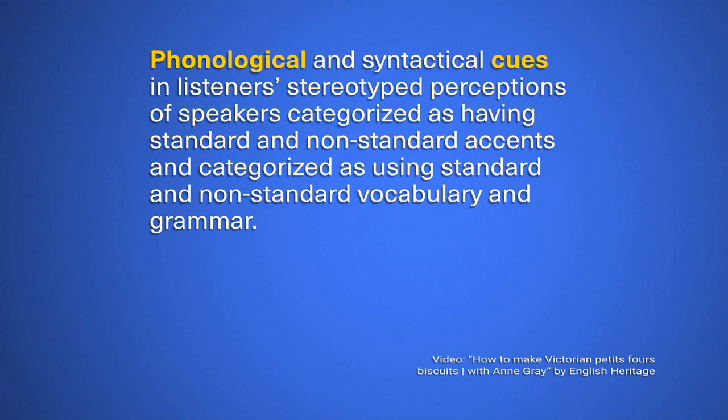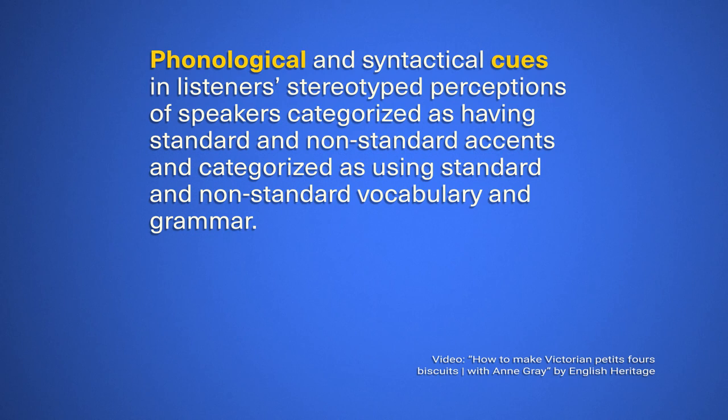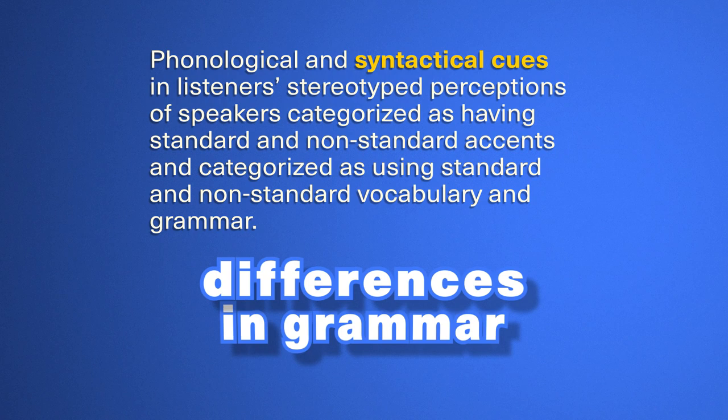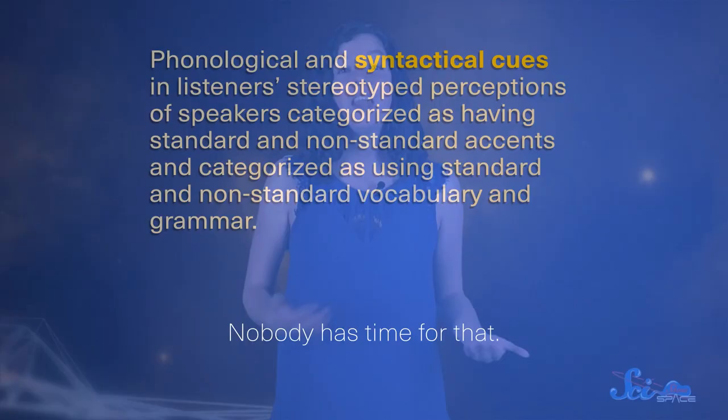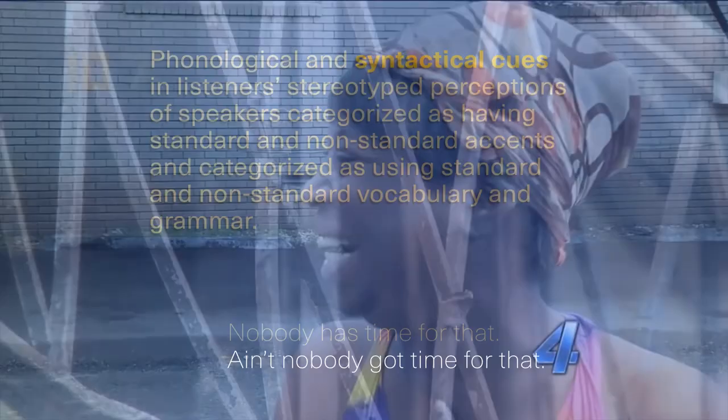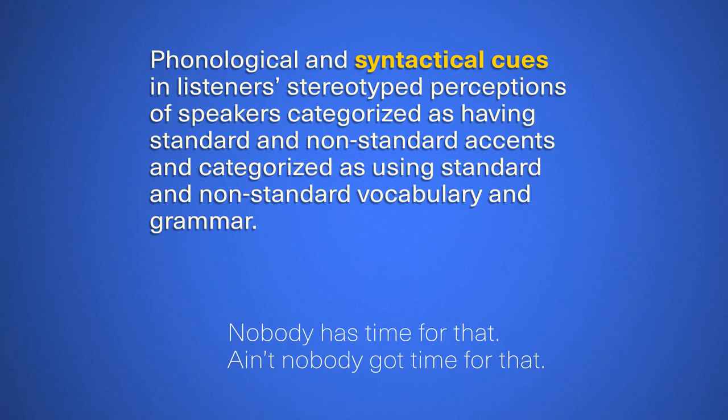Phonological cues are the differences between the sounds we and another speaker produce. We use these phonological differences to identify the speaker's speech as having an accent. Syntactical cues are differences in structure — in plain English, you hear differences in grammar. For example, if you hear 'Nobody has time for that,' you pick up not only on the accent, but also on different grammar structures.